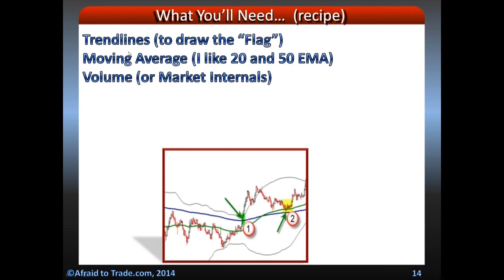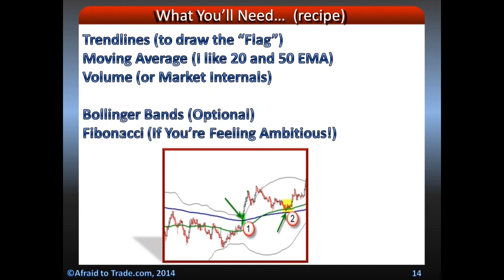I like to use the 20 and 50 exponential moving averages — a short-term connected average and a little more intermediate — giving you two different points of view. The 20 is more short-term; you can typically take trades off of that. The 50 is how you determine if the trend day is likely to fail. Same goes for daily charts on the swing frame — same logic, just a higher time frame. Volume or internals would be the key focal points. If you're ambitious, you can use Bollinger Bands for targeting and Fibonacci for buying pullbacks, placing stops, or managing entries.